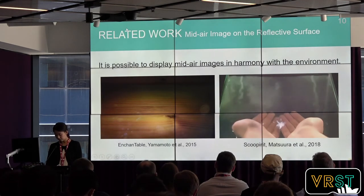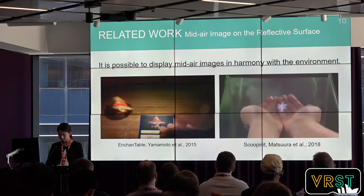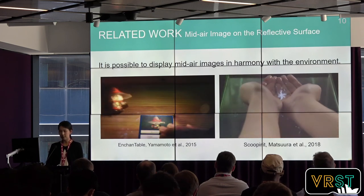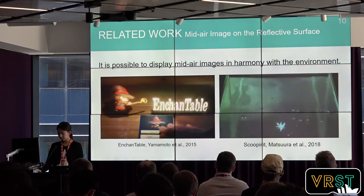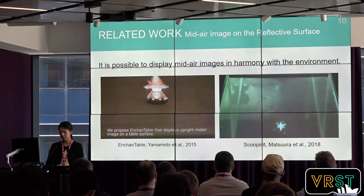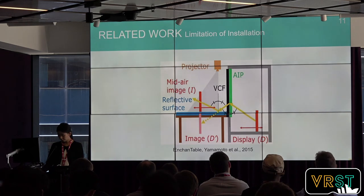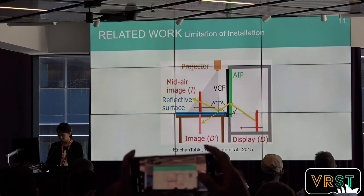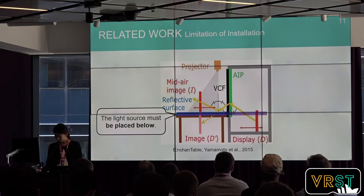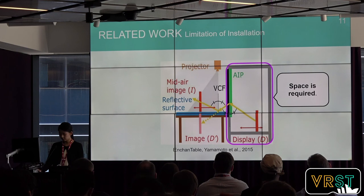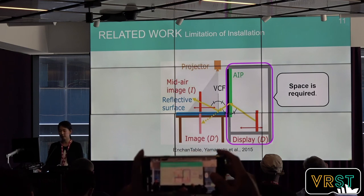By displaying a mid-air image using other reflective surfaces, it is possible to display a mid-air image in harmony with the environment, as shown in these videos. These mid-air images are displayed using the reflection of a table surface or water surface. However, it is difficult to display a standing mid-air image on the floor surface with these systems. There are two reasons: first, the top edge of the light source must be lower than the table surface; second, space is required behind the reflective surface to install the system.